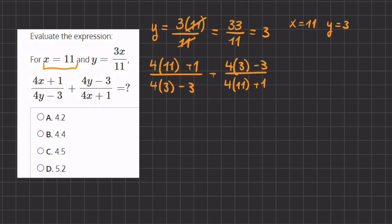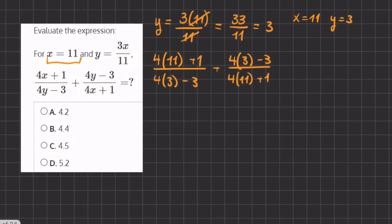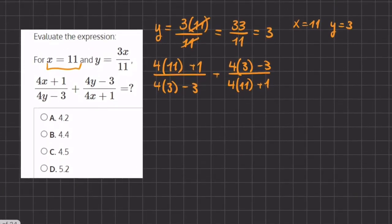Now let's start simplifying. We have 4 times 11 which is 44, plus 1. So that gives us 45, divided by 4 times 3, which is 12, minus 3, gives us 9.